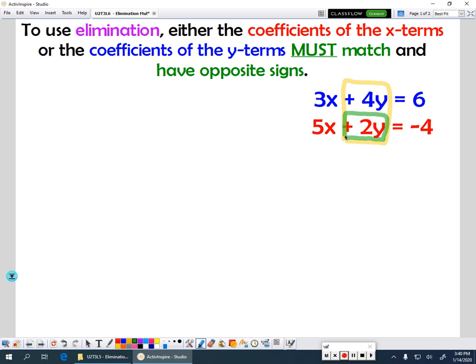If you think about it, I can make this 2y into a 4y by just multiplying this whole equation by 2. If I were to multiply this equation by 2, then this middle term here would become a 4y. And remember, we can do that because of our multiplication property of equality. As long as I multiply everything, it doesn't change the value of this equation.